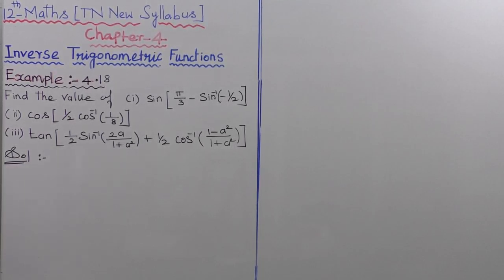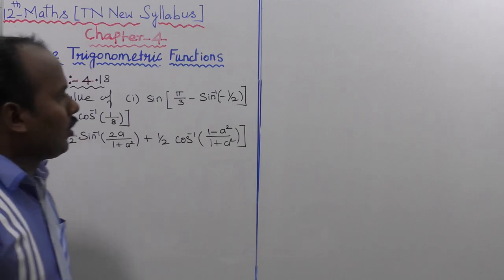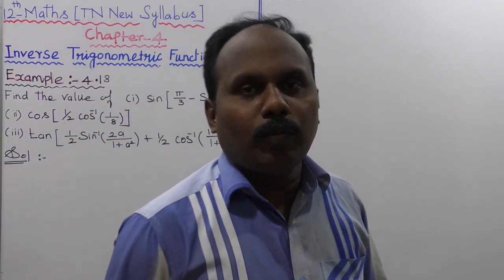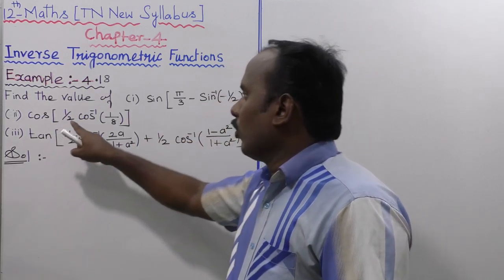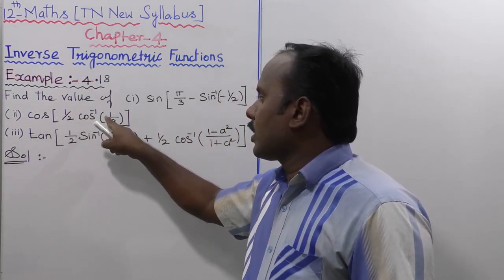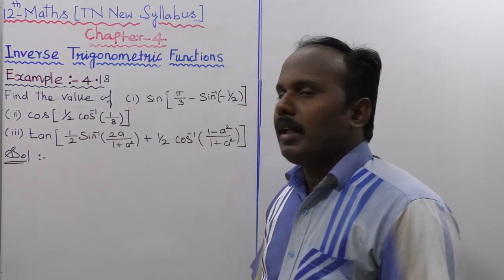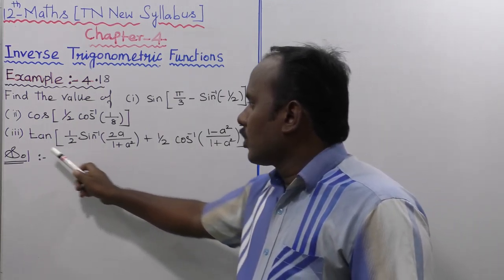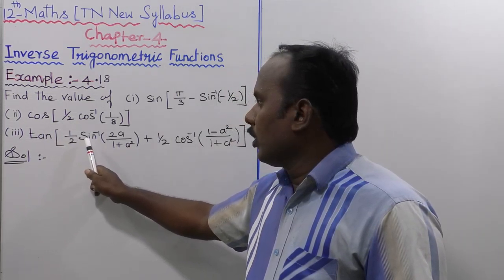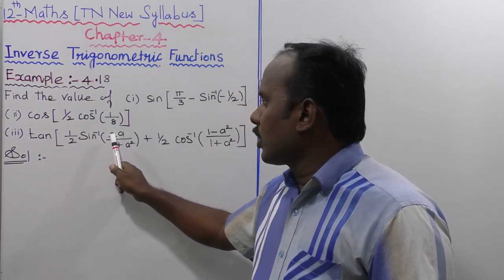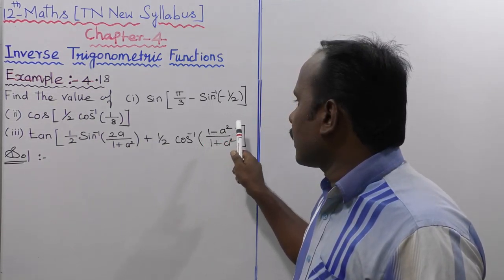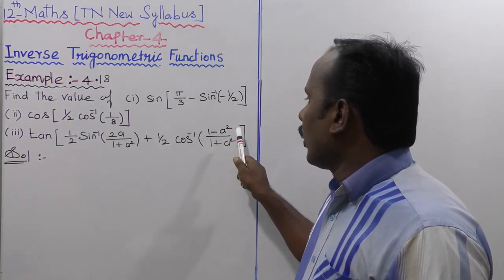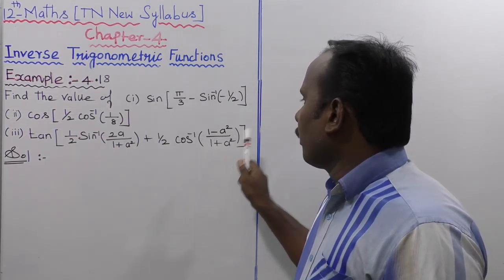Example 4.18: Find the value of the following subdivisions. The first is sin(π/3 - sin⁻¹(-1/2)). The second is cos(1/2 · cos⁻¹(1/8)). The third is tan of (1/2 · sin⁻¹(2a/(1 + a²)) + 1/2 · cos⁻¹((1 - a²)/(1 + a²))).